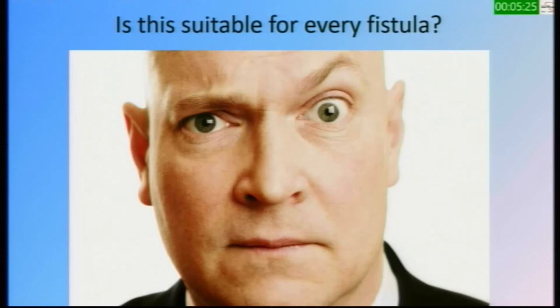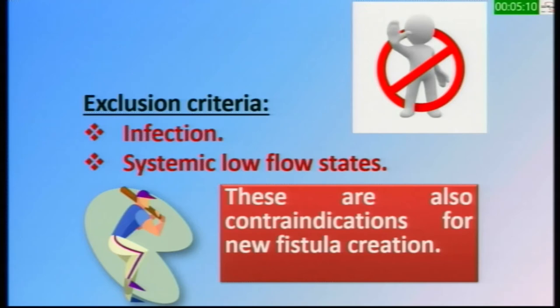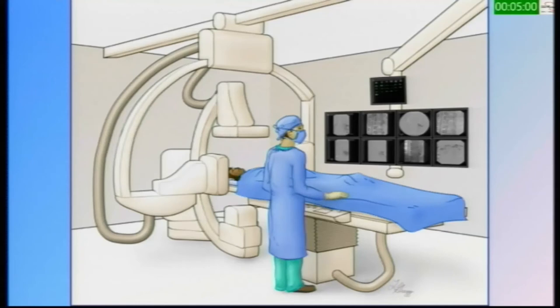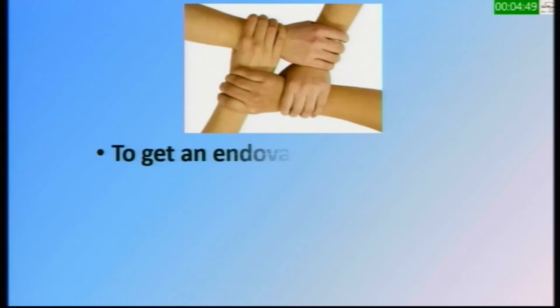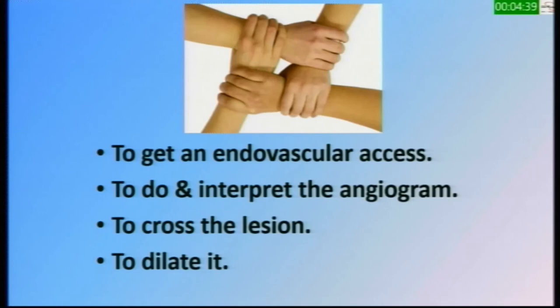Is endovascular salvage suitable for every fistula? The answer is: as long as there is no infection and no systemic low-flow state, yes, it is suitable for every fistula. Those exclusion criteria are also exclusion criteria for creation of a new fistula. Is it an easy or difficult job? It is an easy job. You can use an angiosuite, and if you have no angiosuite, you can do it duplex-guided. The four steps to salvage an access endovascularly are: gain endovascular access, perform and interpret the angiogram, cross the lesion, then dilate it.